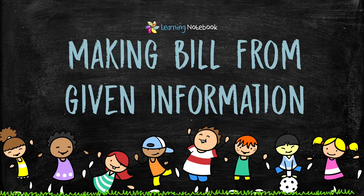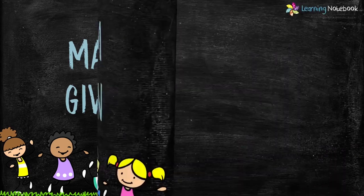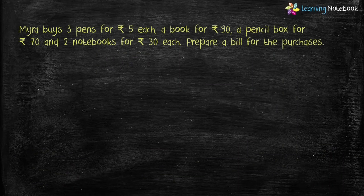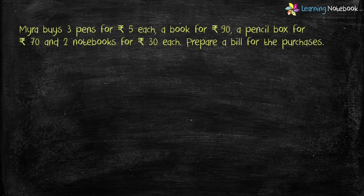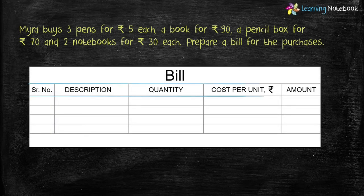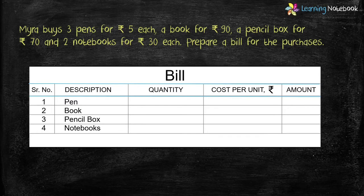Now let's see how to make a bill from given information. Myra buys three pens for rupees 5 each, a book for rupees 90, a pencil box for rupees 70, and two notebooks for rupees 30 each. Prepare a bill for the purchases. First write the serial number and description for the items purchased. Next, from the question, write the quantity of each item: Myra purchased three pens, one book, one pencil box, and two notebooks.